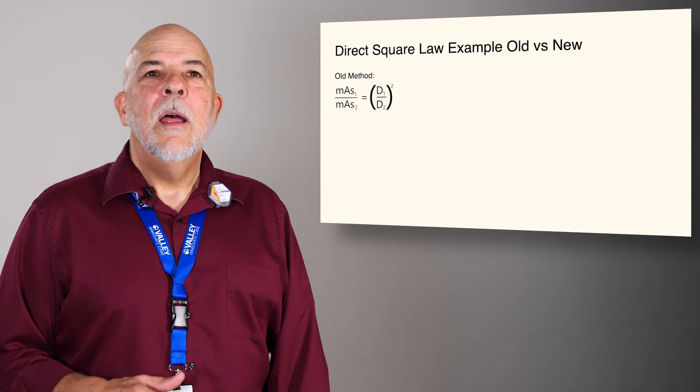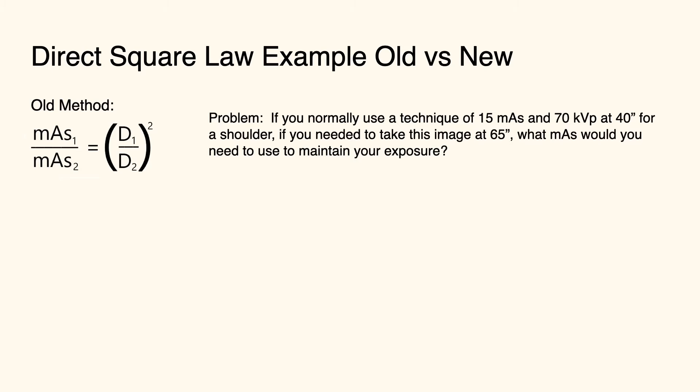So here's the new formula. Again, a very basic word problem. We're going to say you had a technique of 15 mAs at 70 kVp at 40 inches, and you're using that for a shoulder. Let's say for whatever reason, you need to take that image at 65 inches. What mAs would you need to use to maintain your exposure at this increased distance?